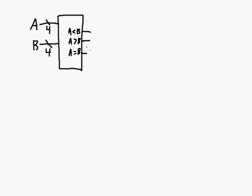Only one of these outputs can be active at any given time. Let's focus on the case of A equal to B. A is equal to B if all of the bits of A are the same as all the bits of B. So how are we going to do that with a logic circuit?